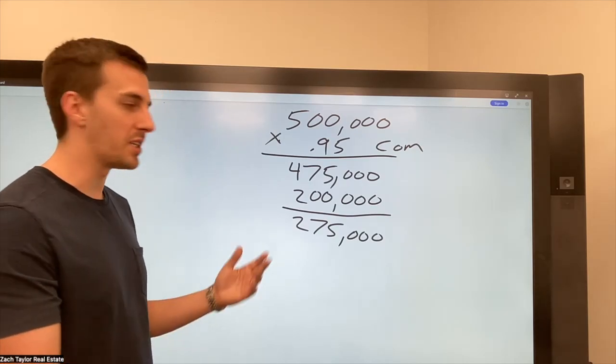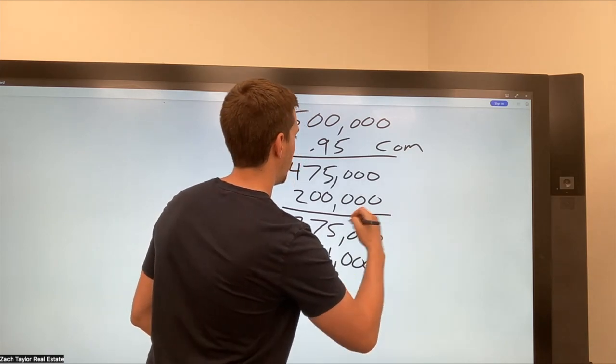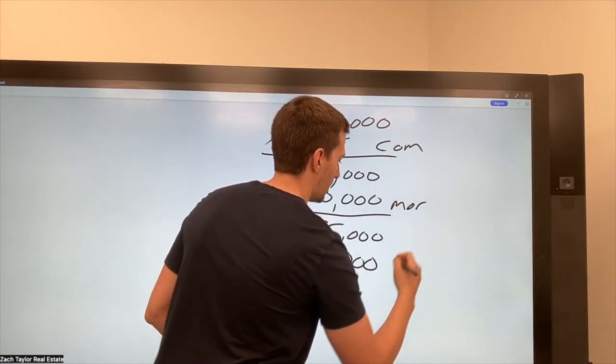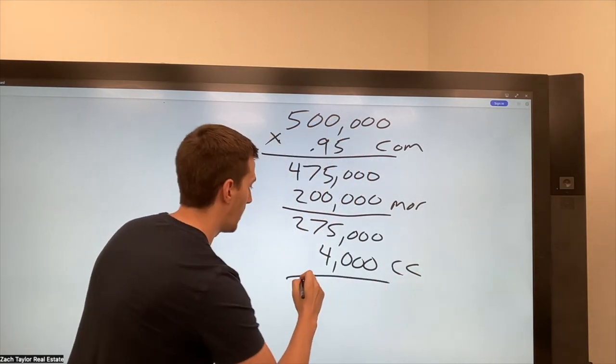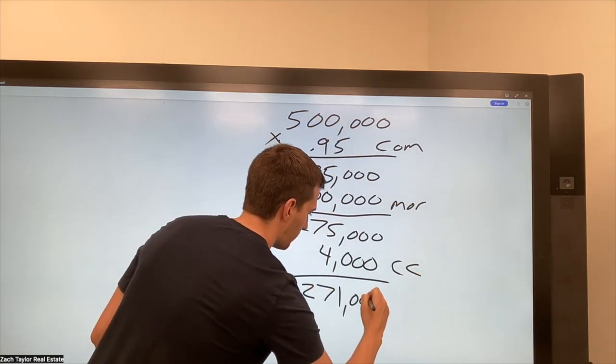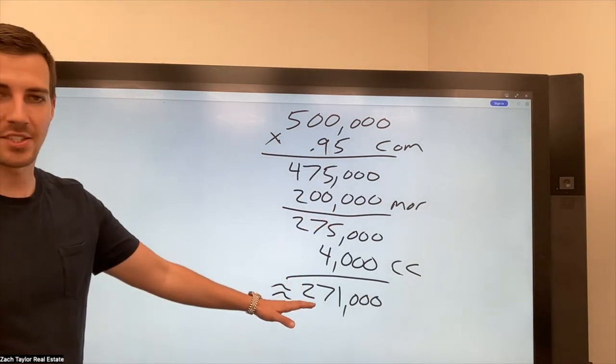So let's just say to keep it easy. Let's just say it's $4,000 and this is mortgage and this is closing costs. So now we're down to 271 roughly. And this is an estimate.